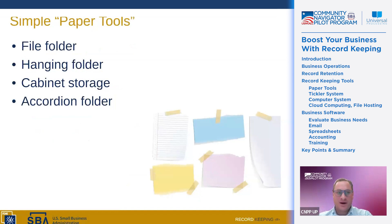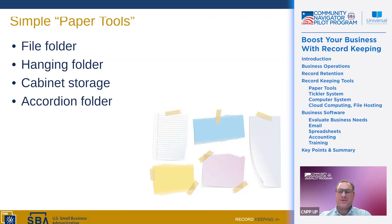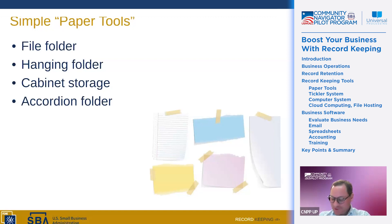File folders hold loose papers together for organization and protection and can easily be purchased at office supply stores. Label file folders based on what's inside by writing on the tabs or using adhesive labels. A personal tip: use a consistent system for your labels so they correspond to each other within the larger system. Use hanging folders to group several file folders together — for example, a hanging folder labeled 'Clients' might contain individual client folders organized by month and year. It's better to have more folders with further delineation rather than fewer very full folders, since searching through a packed folder makes it hard to find what you're looking for.